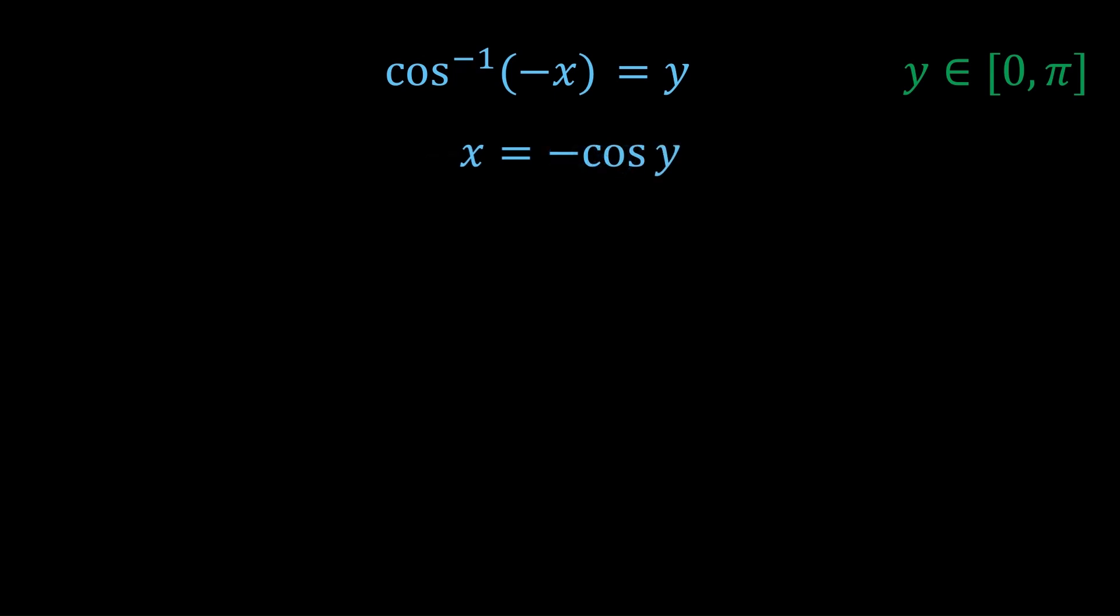So that means x is equal to minus cos y. And we know that cos π minus θ is equal to minus cos θ. And if you don't know that, check out the video in the description on trig identities.